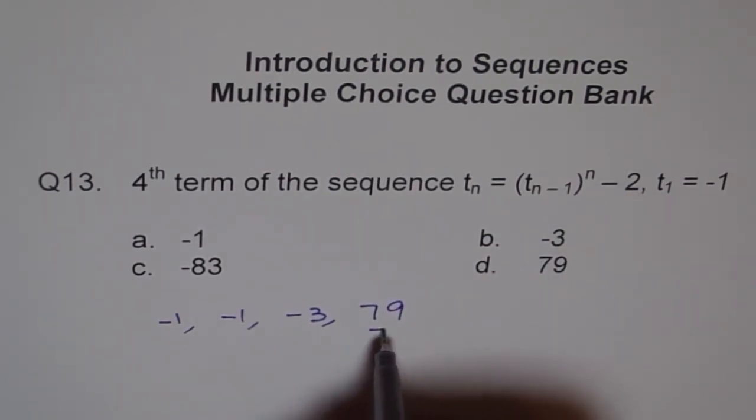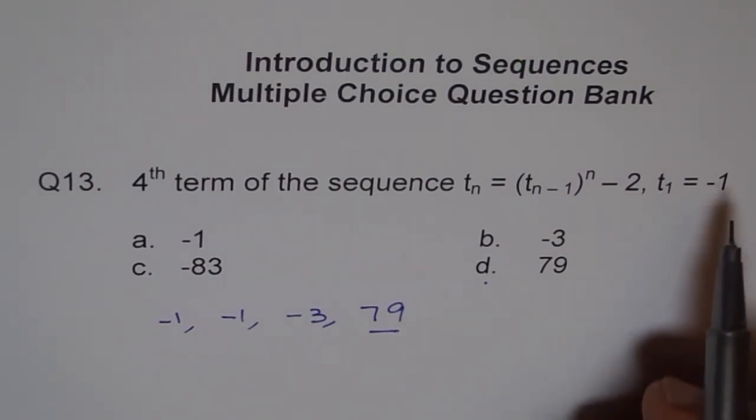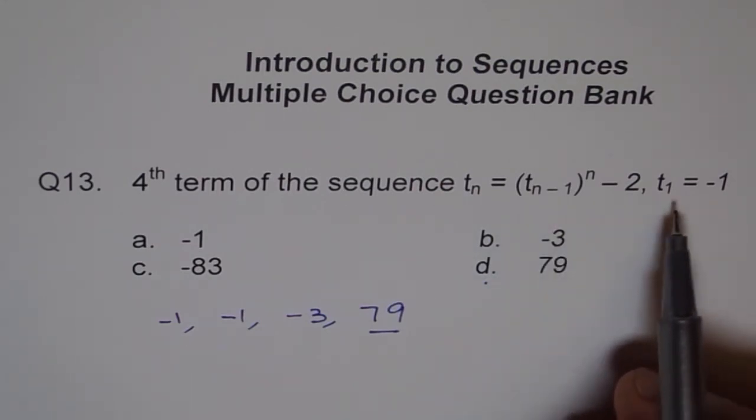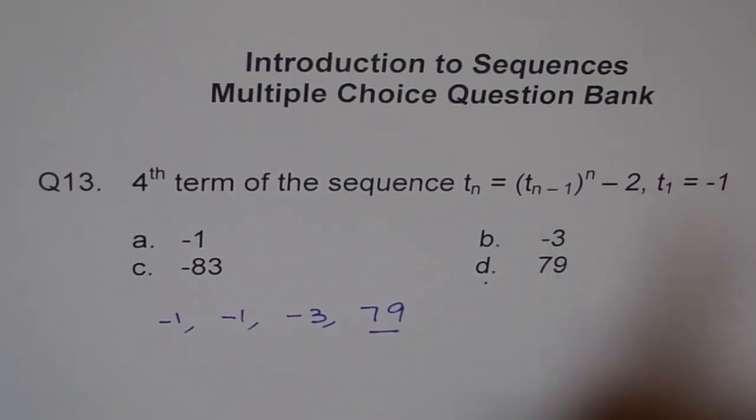That is our fourth term and matches with d. So our answer is d. In such sequences, the best thing is to calculate your values by plugging in n as 1 (given to us), 2, 3, 4 and find your terms. Thank you.